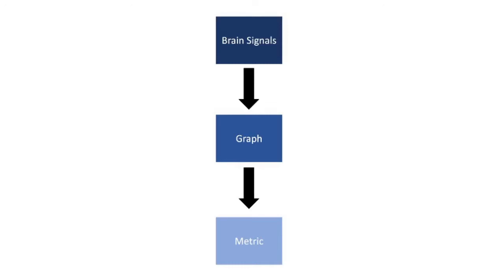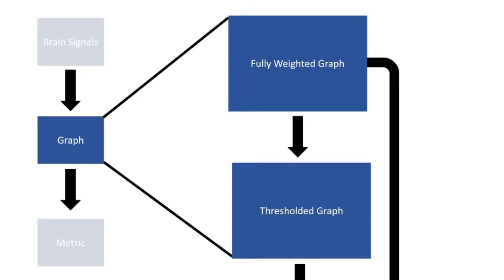To summarize: we have a brain signal which leads to a graph which leads to a particular metric. The main issue in most graph theory research in neuroscience lies in the construction of the graph. We can either take the fully weighted graph — but there are theoretical contraindications that the brain should not be fully weighted — or we need to threshold it, and that is the subject of this paper.